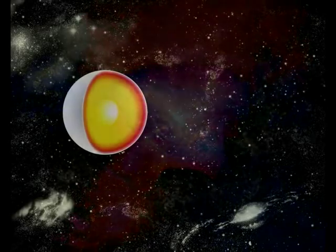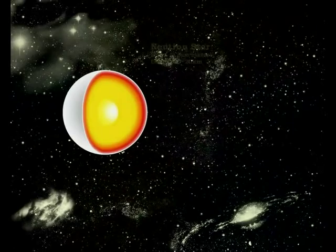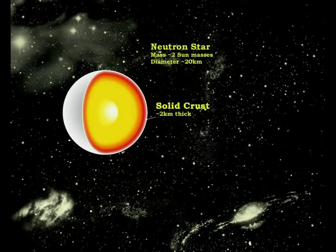A neutron star is an exotic object. Typically, it is more massive than our Sun, but its diameter is only 20 km. This means the center of the star consists of nuclear matter compressed to extremely high densities, being 5 to 10 times higher than in atomic nuclei.